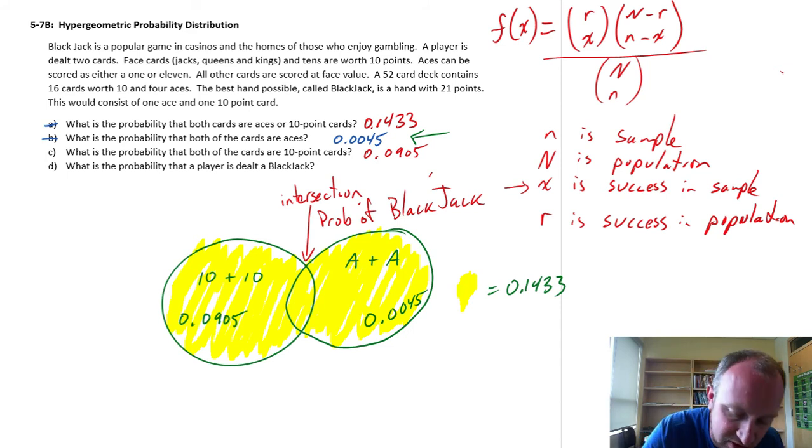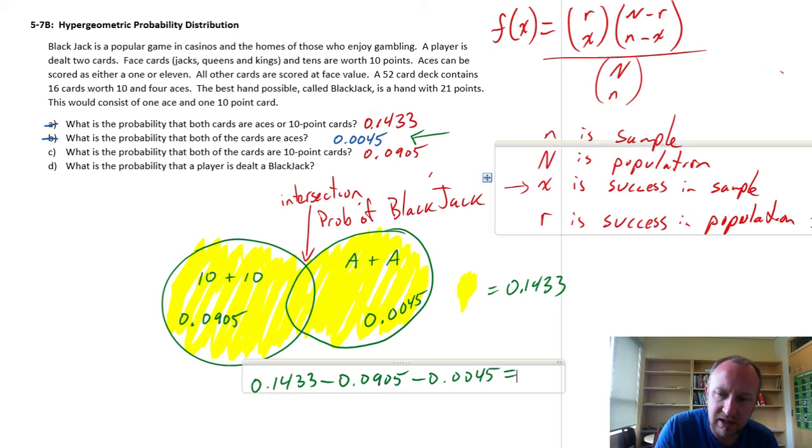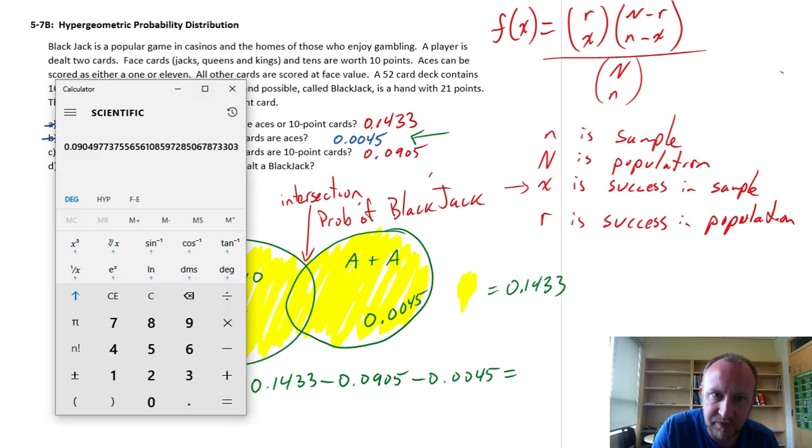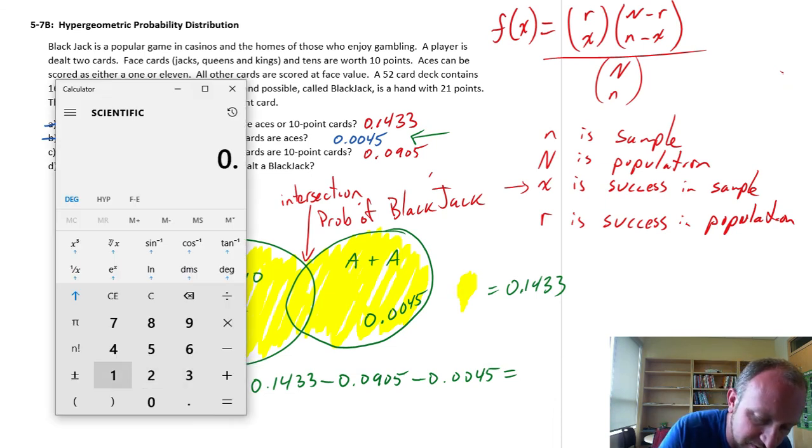So if I look at calculating that intersection, well, it's the union of those two events, 0.1433, minus the probability of two tens, minus the probability of two aces. And finally, where's my calculator? That's going to be 0.1433 minus 0.0905 minus 0.0045.